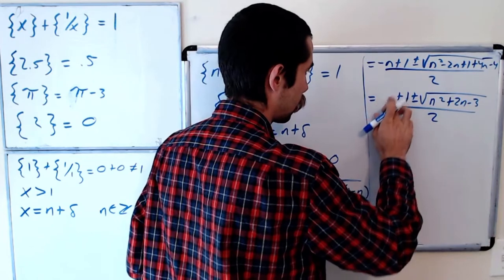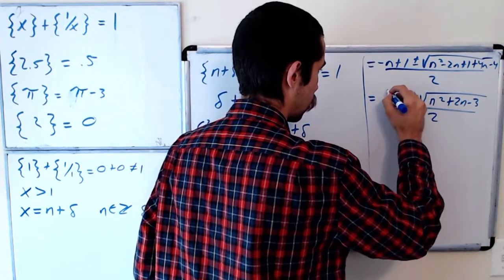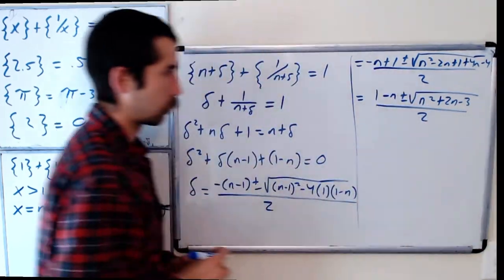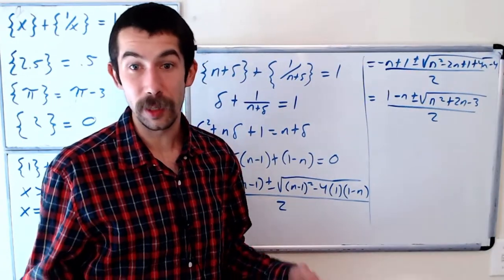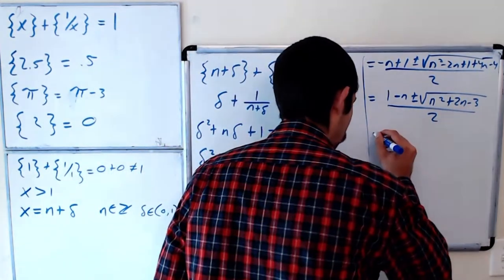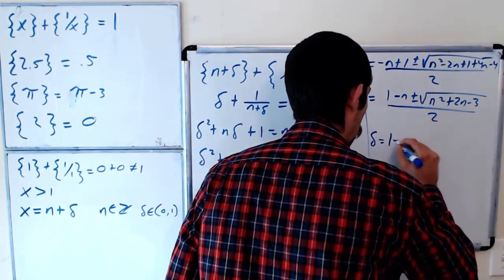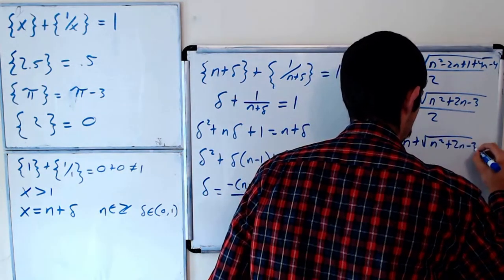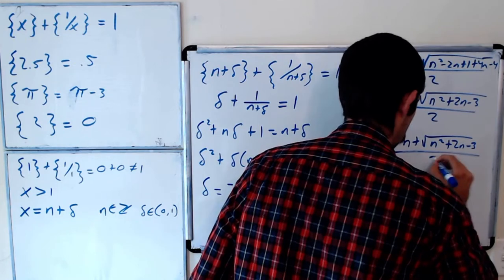And let's rewrite this as 1 minus n. Since delta is going to be positive we're going to only take the plus part here. So delta is equal to 1 minus n plus root n squared plus 2n minus 3 all over 2.